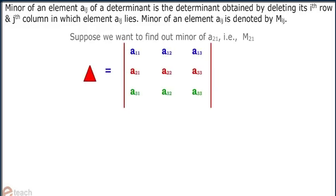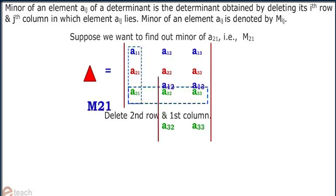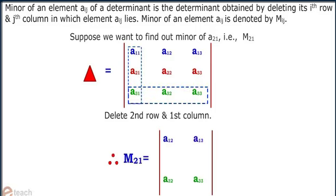Suppose we want to find out minor of a21, that is m21. Then delete the second row and the first column. Then you will obtain the minor m21 as the remaining determinant of order 2 by 2.